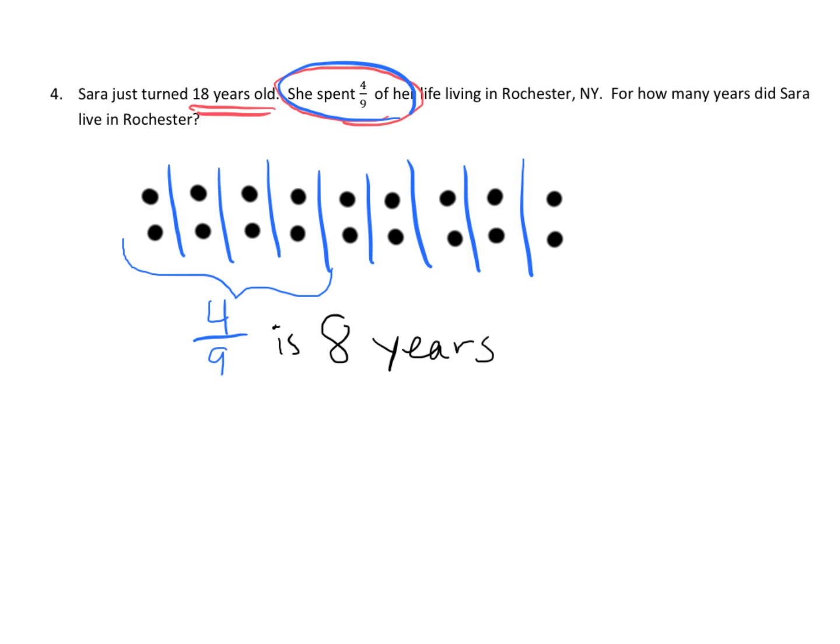Now to do it a little bit more mathematical, what would we do? First we would take that 18. So I'm going to put 4 ninths of 18. Now what would we do? First thing I'm going to do is I'm going to do 18 divided by 9 and that's 2. And that tells us how many years are in each ninth. And then because we want 4 of those ninths, so now we're going to do 4 times the 2 and that gives us 8. And so the answer is 8 years.